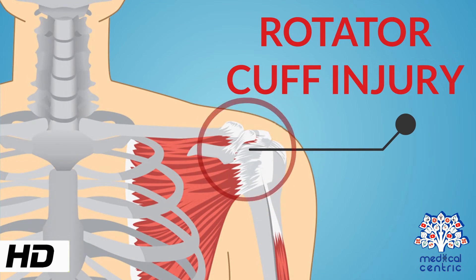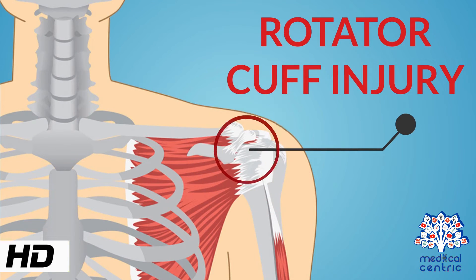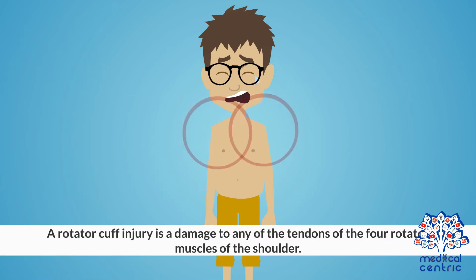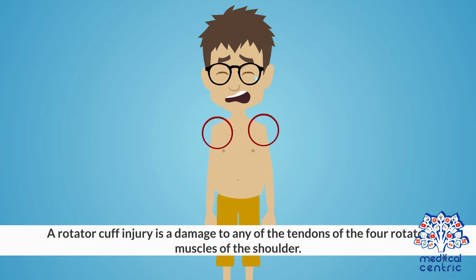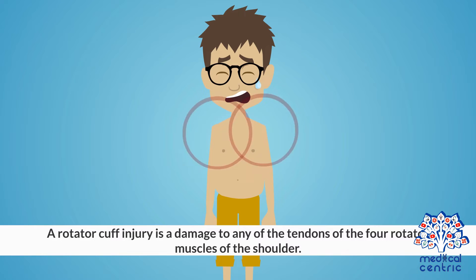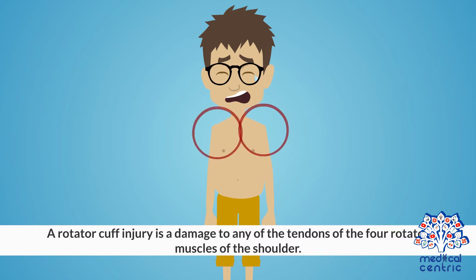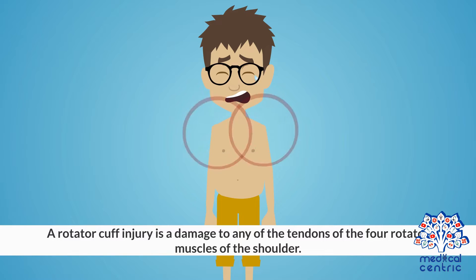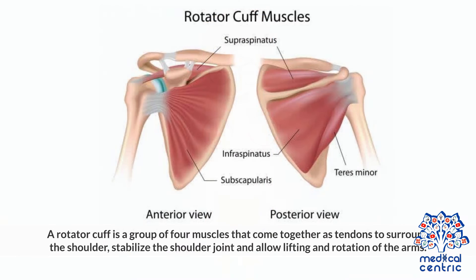Today's topic is rotator cuff injury. A rotator cuff injury is a damage to any of the tendons of the four rotator muscles of the shoulder. A rotator cuff is a group of four muscles that come together as tendons to surround the shoulder, stabilize the shoulder joint, and allow lifting and rotation of the arms.